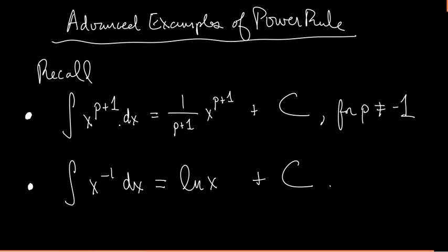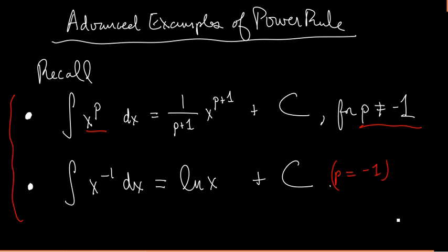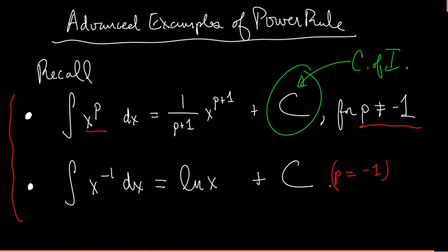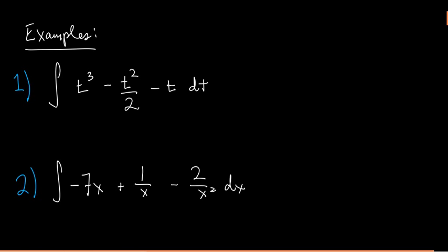In this video we're going to go over some advanced examples of the power rule for integrals. Remember the power rule for integrals has two cases: one for when the power p is not equal to negative one, and one for when it is. If p is not equal to negative one, then the integral of x to the power p equals one over p plus one times x to the power p plus one, plus the constant of integration. When the power is equal to negative one, you get ln x plus the constant of integration.